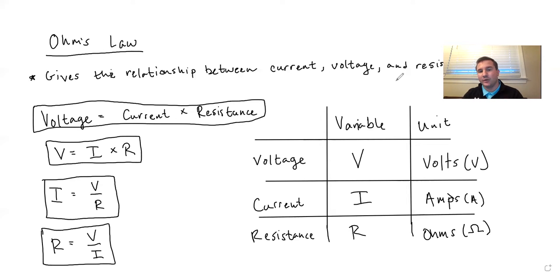Ohm's law gives the relationship between current, voltage, and resistance. The relationship is voltage equals current times resistance. V equals I times R. I equals V over R.